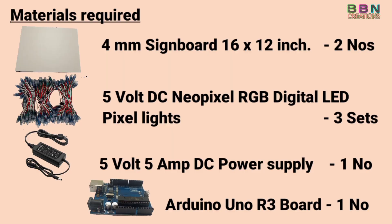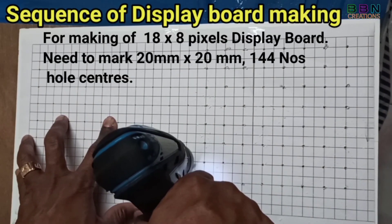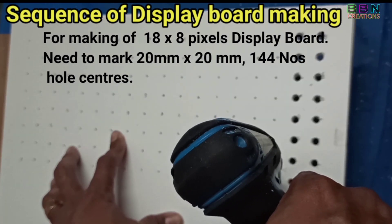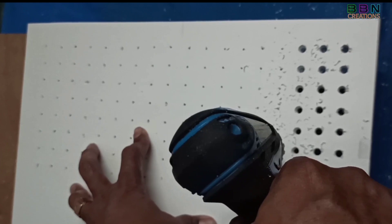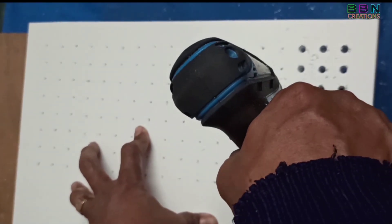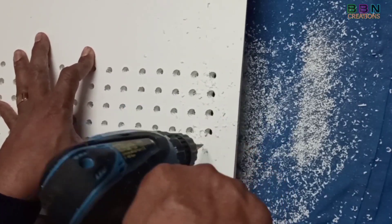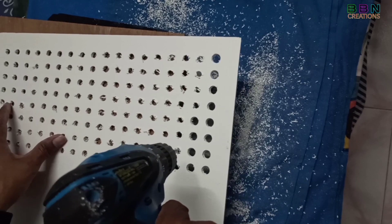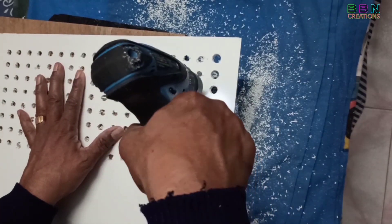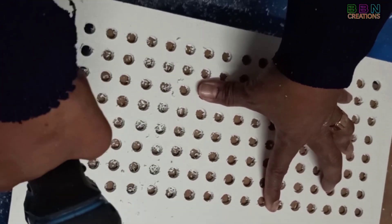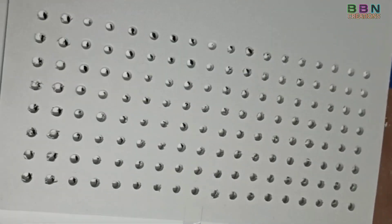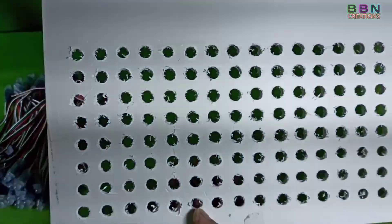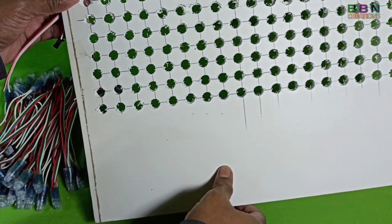We also need an Arduino Uno R3 board. Today we are going to make an 18 by 8 pixel display board, meaning we need 144 LEDs in total. First, mark 20 by 20 mm hole centers in the board. Keep both boards together and make 10 mm diameter holes — 144 in total — by drilling. Then remove one board and enlarge the hole size to 12 mm. Now fix each bundle of LED string in the board in a zigzag shape. The first bundle fixing should be started from the left side of the board, otherwise the display will appear as a mirror image.